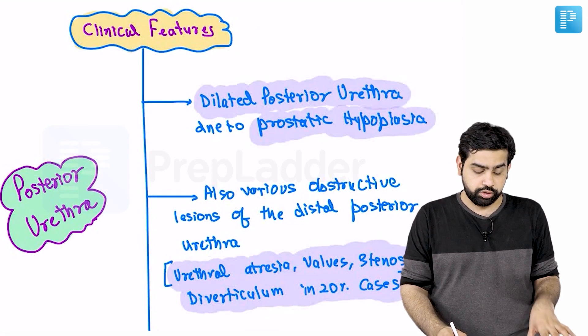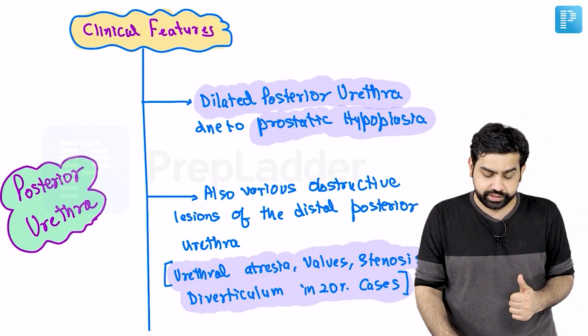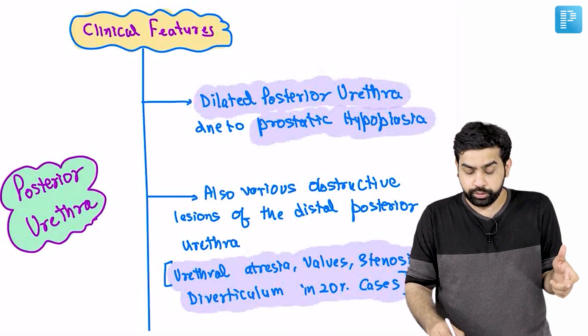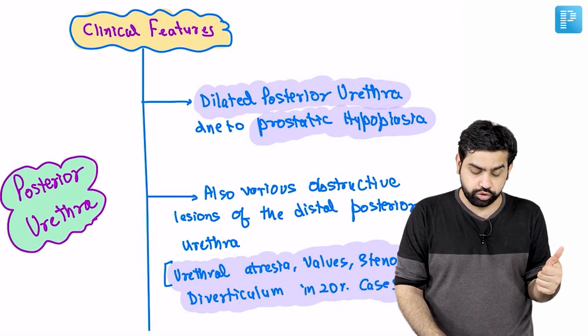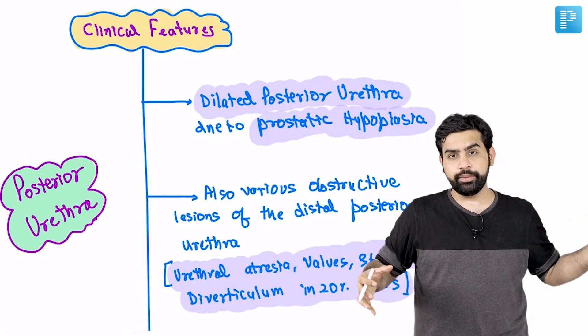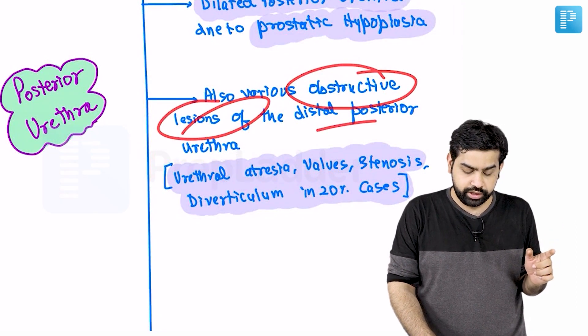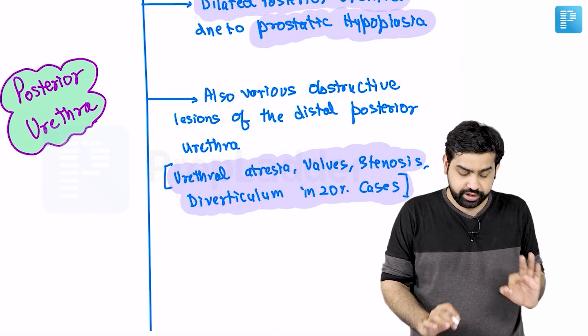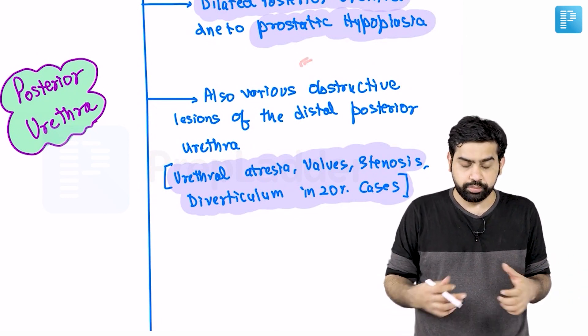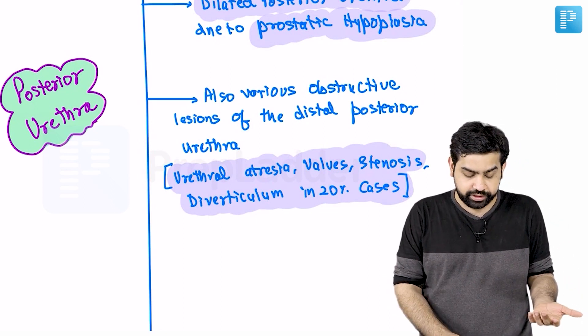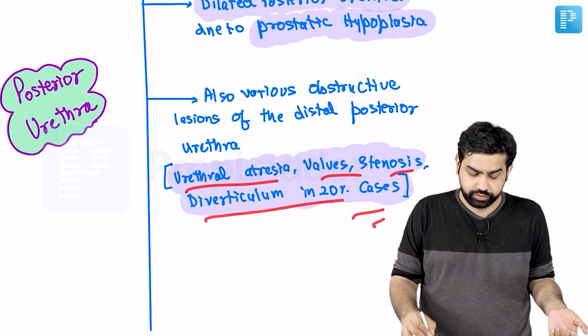Regarding the posterior urethra, there is dilation due to prostatic hypoplasia. This can be confused with posterior urethral valves, where dilation occurs due to obstruction. In Prune Belly Syndrome, the most common cause is improper prostatic development. Obstructive lesions such as urethral atresia, valves, stenosis, or diverticulum can also contribute and are present in approximately 20% of cases.